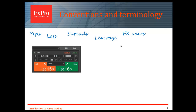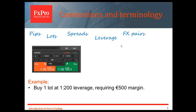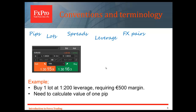We're doing an example of buying one lot at 1:200 leverage, and to do that we need a $500 margin. The important thing is to calculate the PIP value. We talked about PIPs last week — a PIP in EUR/USD is the fourth decimal place. For most currencies, one PIP is the fourth decimal place. The main exception among the majors is USD/JPY, which is quoted normally to two decimal places. So we need to know at the beginning what the value of each PIP is in that trade.